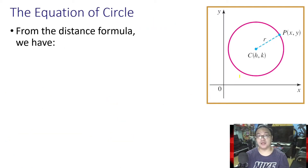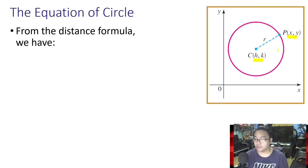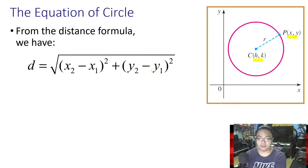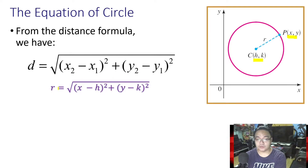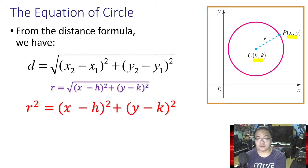From the distance formula, in this figure, in order for us to find the radius — the length of the radius — we can get the distance using the coordinates of the center C and a point on the circle P. Using the distance formula and substituting those coordinates, we get: the radius equals the square root of (x minus h) squared plus (y minus k) squared. Squaring both sides gives us r squared equals (x minus h) squared plus (y minus k) squared.